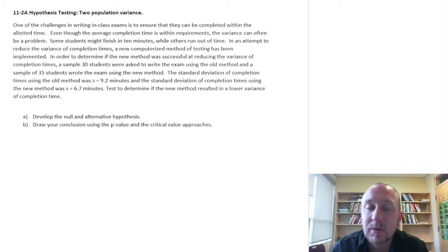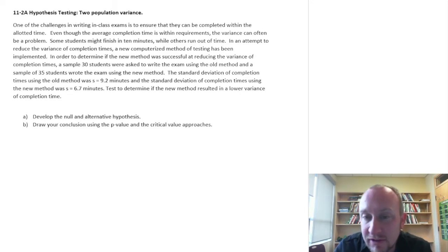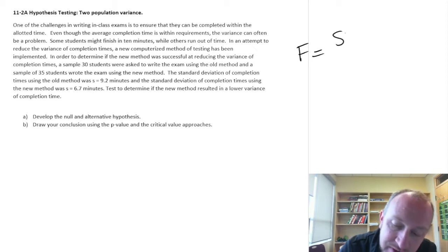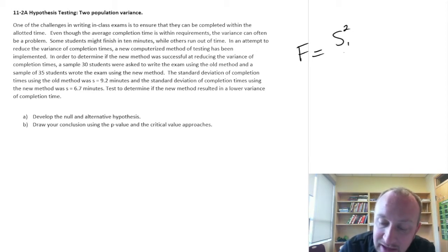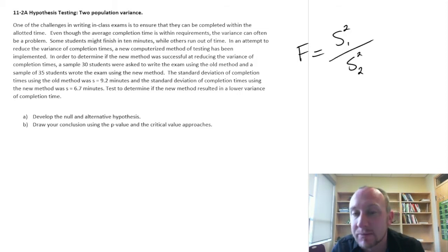When we're working with two sample variances, the distribution that we're going to be using is the F-distribution. The F-distribution is simply the ratio of two chi-squared variables, and in this case our two chi-squared variables are our two sample variances.